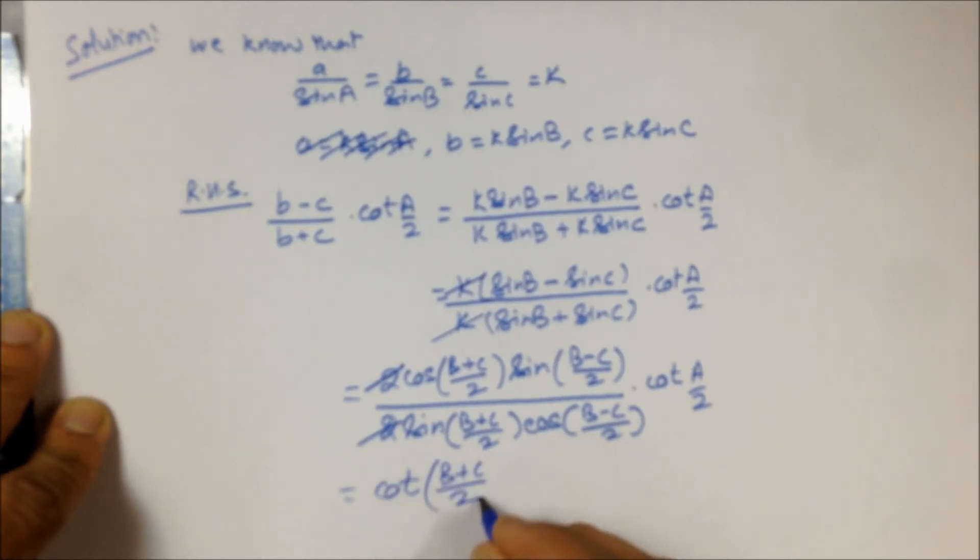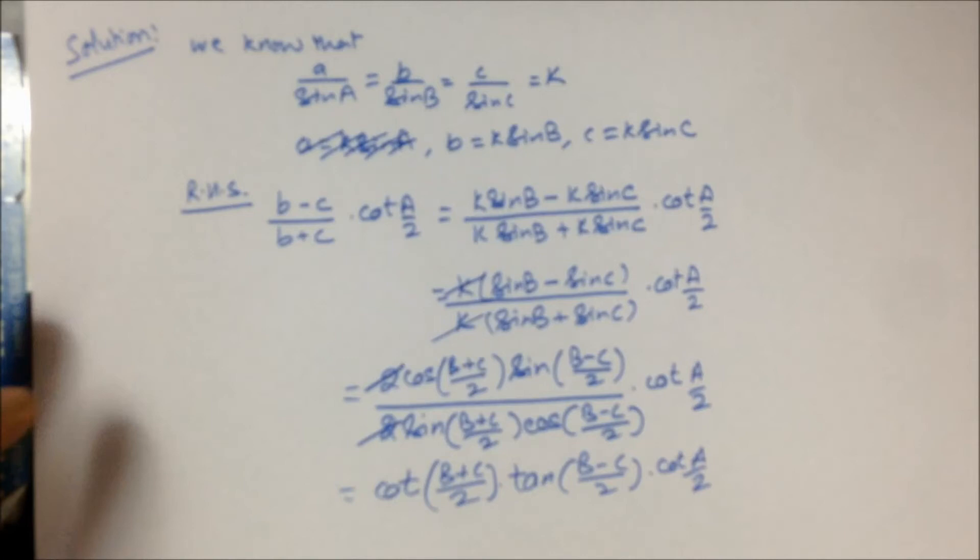This becomes cot((B+C)/2)·tan((B-C)/2)·cot(A/2). Now with this we'll enter the last few steps of the question.